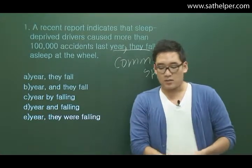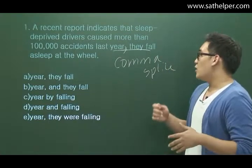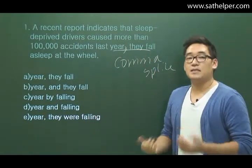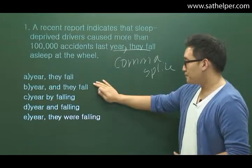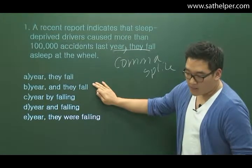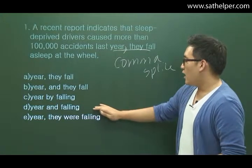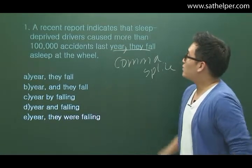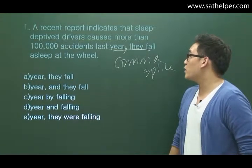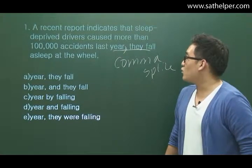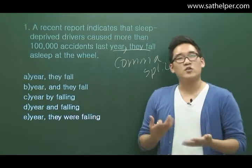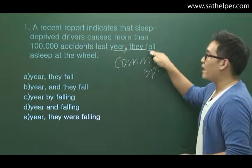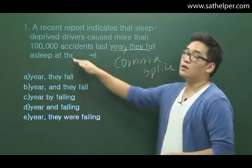The best answer is one in which we convert the independent clause into a dependent clause. The conjunctions in the other choices — 'and' and 'falling' — do not work very well in the sentence. If you chose B: 'A recent report indicates that sleep deprived drivers caused more than a hundred thousand accidents last year and they fall asleep at the wheel' — it changes the meaning of the sentence a bit. There's a better way to connect the fact that it's them falling asleep at the wheel that causes the hundred thousand accidents.